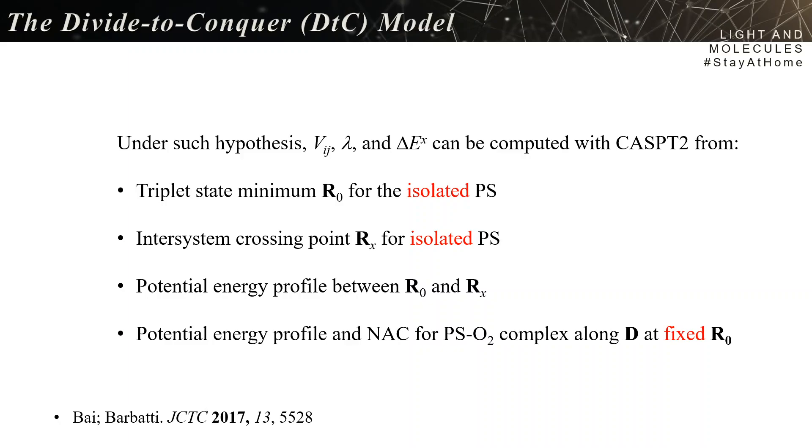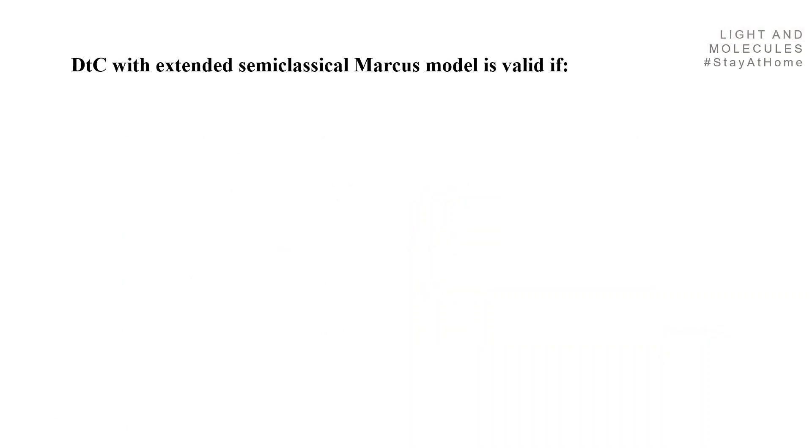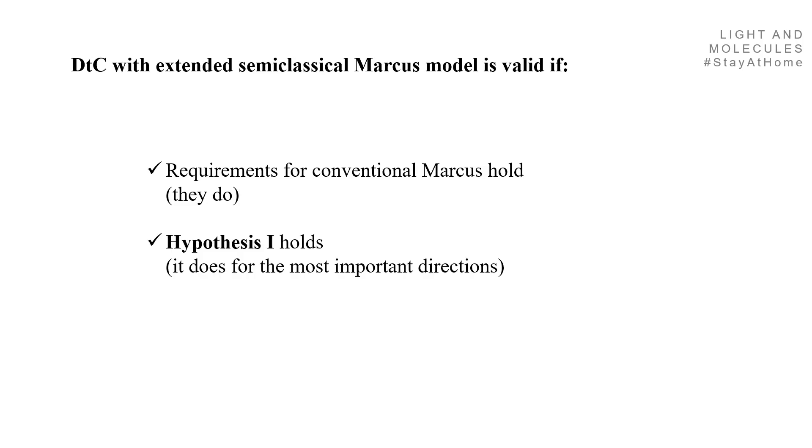And all these four things are allowed because you are under the hypothesis that hypothesis 1 works. The DTC divide-to-conquer method with extended semi-classical model will be valid if all the requirements for the conventional Marcus hold—the same that were discussed in the first part—and they do, if hypothesis 1 holds, and it does for most of cases that we studied.